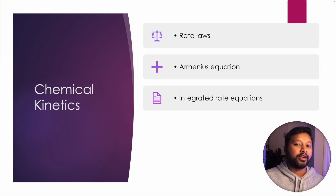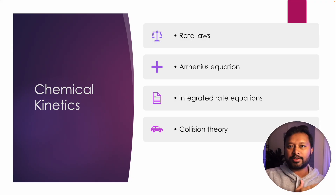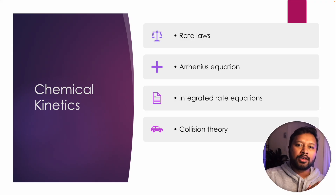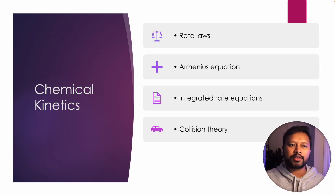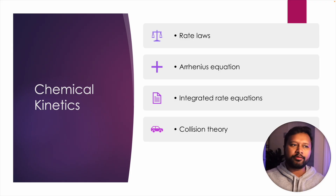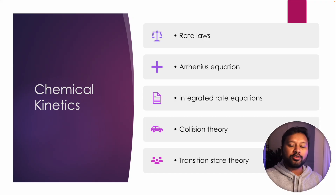Next comes collision theory, which is in the advanced part of chemical kinetics. Its weightage is less than rate law or Arrhenius equation, but questions can certainly come from it. Collision theory includes different theories and equations like the Lindemann theory of unimolecular reactions, enzymatic reactions, and different types of reactions such as parallel, consecutive, and competitive reactions. Most of these videos are available on my YouTube channel where you can finish them quickly and practice questions.